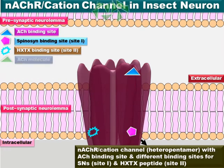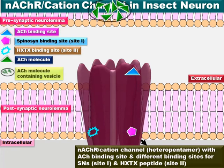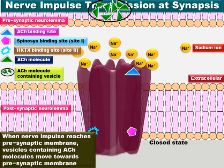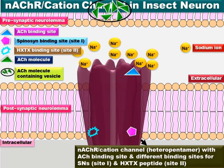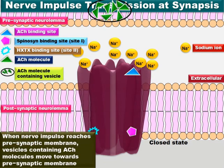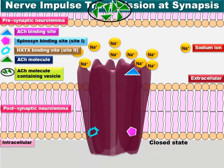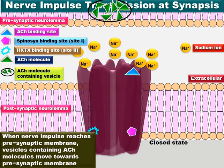The green triangles represent acetylcholine molecules present in vesicles located in the presynaptic nerve ends. The yellow circles are sodium ions. I will now explain how the nerve impulse is transmitted at the nervous synapse — though this has been explained in a different uploaded video, I will explain it again here.